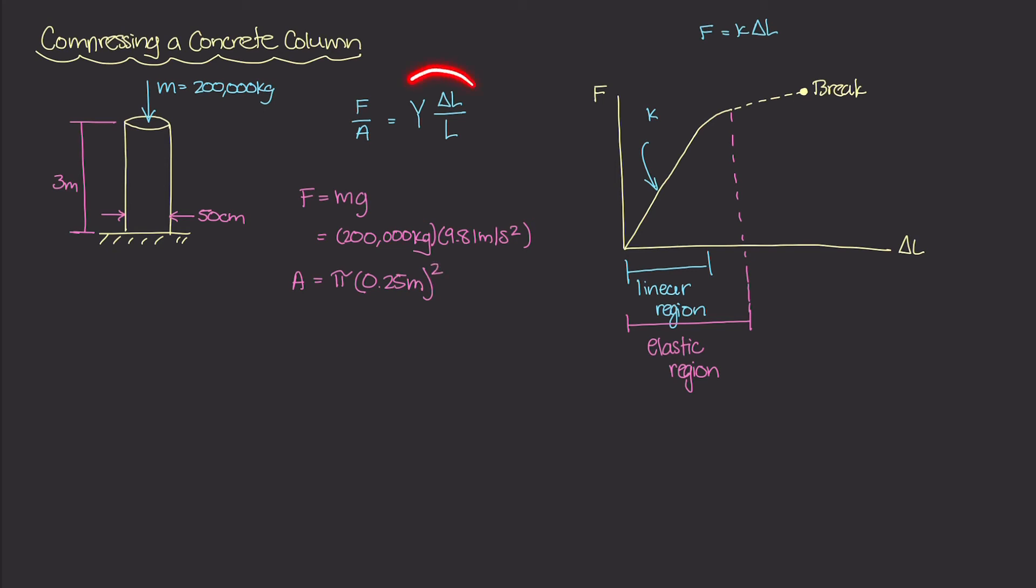Now on the right side of this equation, our unknown is this ΔL, how much this concrete column is going to compress. We know the length. And from tables and from resources anywhere, we can use a value of the Young's modulus for concrete to be equal to 3 times 10 to the 10th newton per meter squared. And finally, the length is 3 meters. So if we plug all of these values in to this equation right here, we should be able to solve for ΔL.